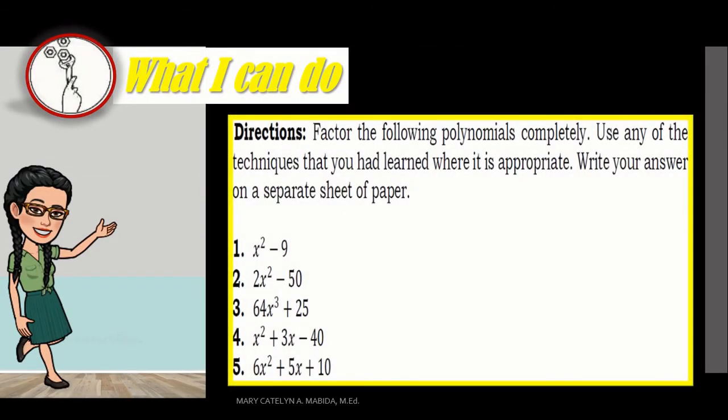What can I do? Factor the following polynomials completely. Use any of the techniques that you had learned where it is appropriate. Can you remember those techniques? Yes, sure you do. Let's recall them. The techniques are: Number 1, Common Monomial Factor; Number 2, Difference of Two Squares; Number 3, Sum and Difference of Two Cubes; Number 4, Perfect Square Trinomial; Number 5, Quadratic Trinomial Where A Equals One; and the last technique that we learned today is Number 6, Quadratic Trinomial Where A is Not Equal to One.